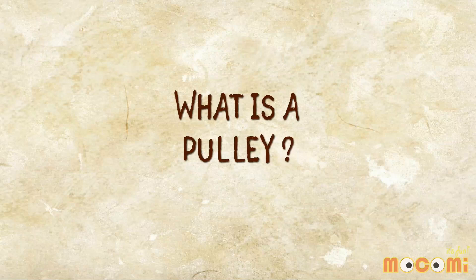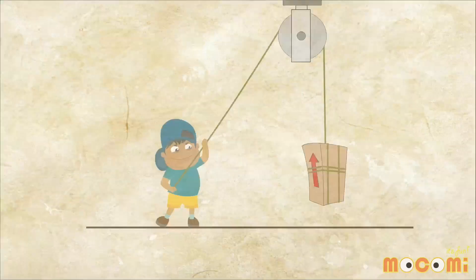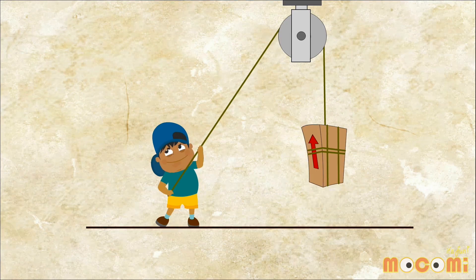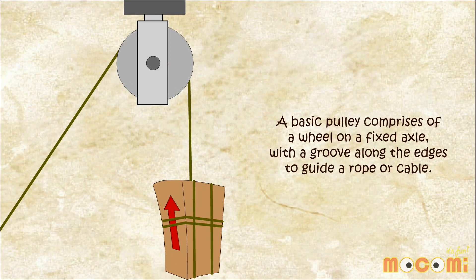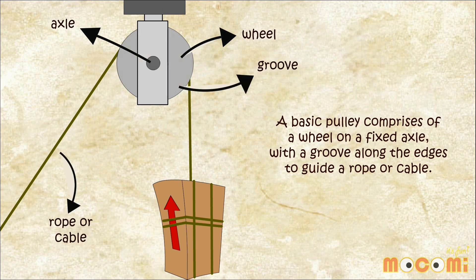What is a pulley? A basic pulley comprises of a wheel on a fixed axle with a groove along the edges to guide a rope or a cable.